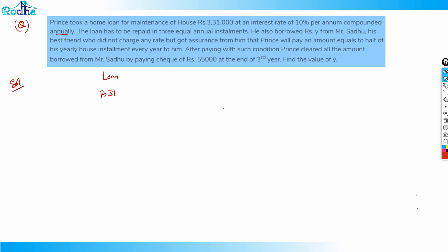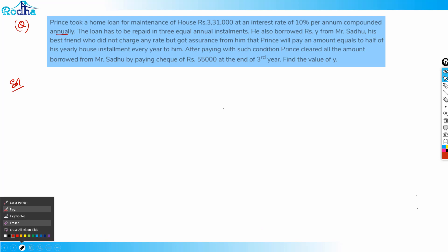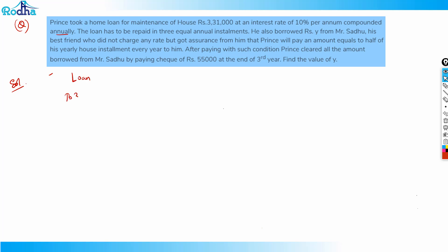So the loan amount is rupees 3,31,000. The general concept here is: let's say you take a loan of rupees 3,31,000 and you pay it in three installments.